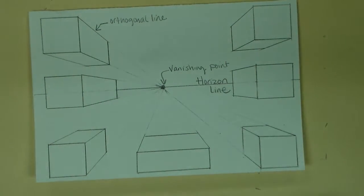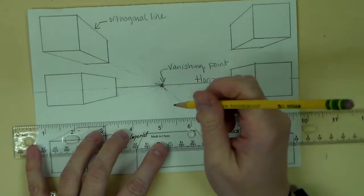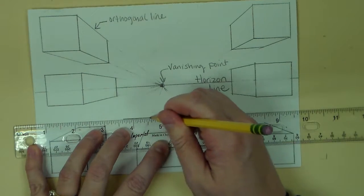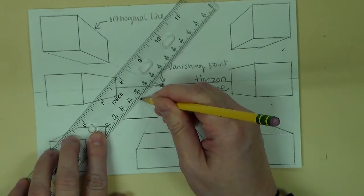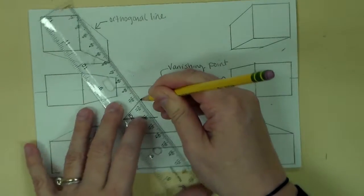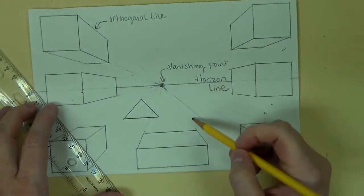Another thing you can do is different shapes. If you want to do something different like a triangle, let's say we're gonna do a triangle over here. Once again I'm just drawing the front of that object, same thing happens.